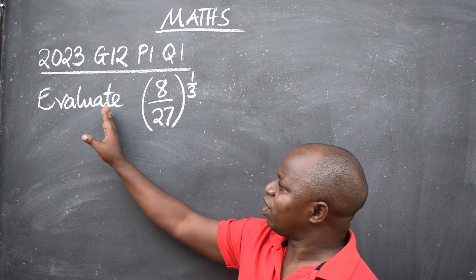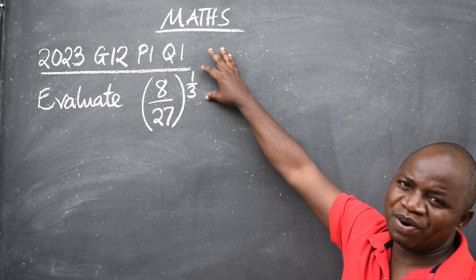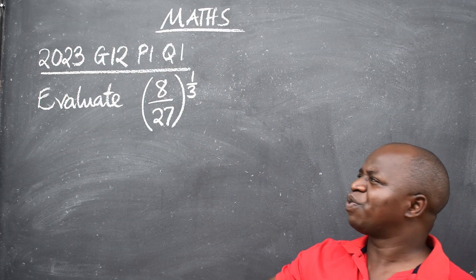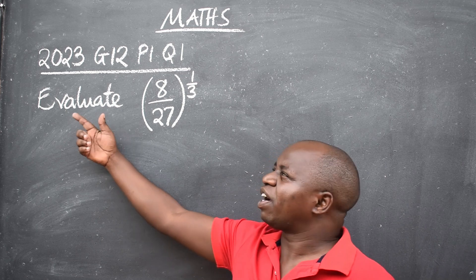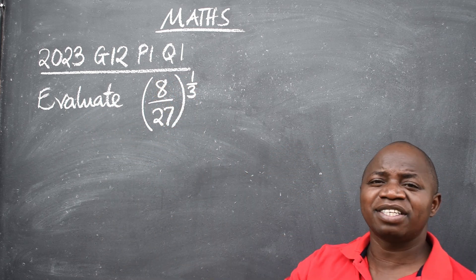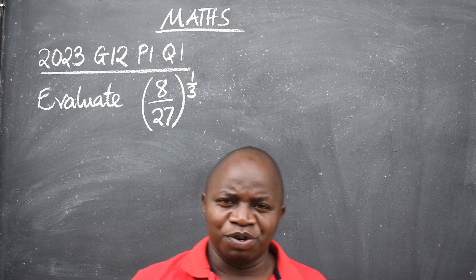The question says evaluate 8 over 27 raised to the power 1 over 3. You are told to evaluate meaning you have to find the exact value of this. Now remember this is paper 1. No calculator is allowed. What do you do?